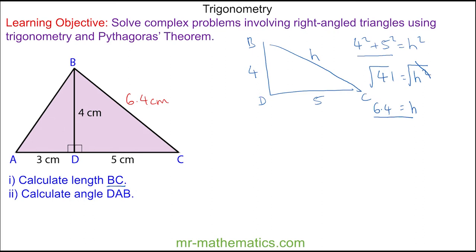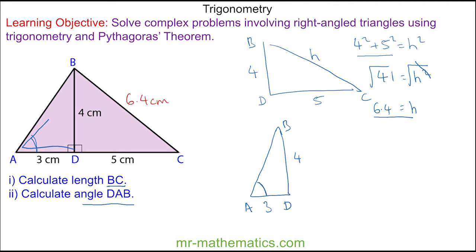Now we're going to work out part 2, which is the angle D to A to B, which is this angle here. We'll sketch another right angle triangle. We know the base between A to D is 3 and between D to B is 4. Because we're trying to work out this angle, we need to label the sides of the triangle. This side is opposite the angle so we call it the opposite, and this side runs adjacent between the two angles so this is the adjacent.